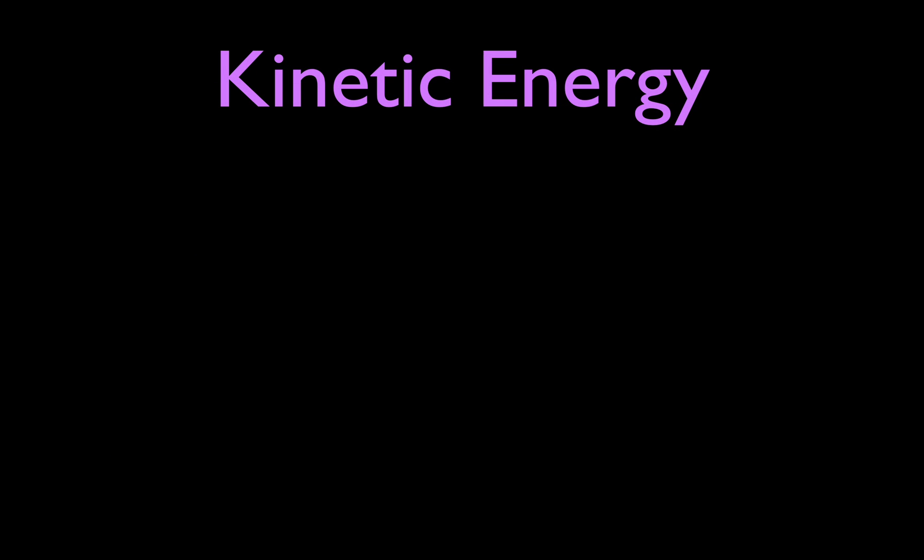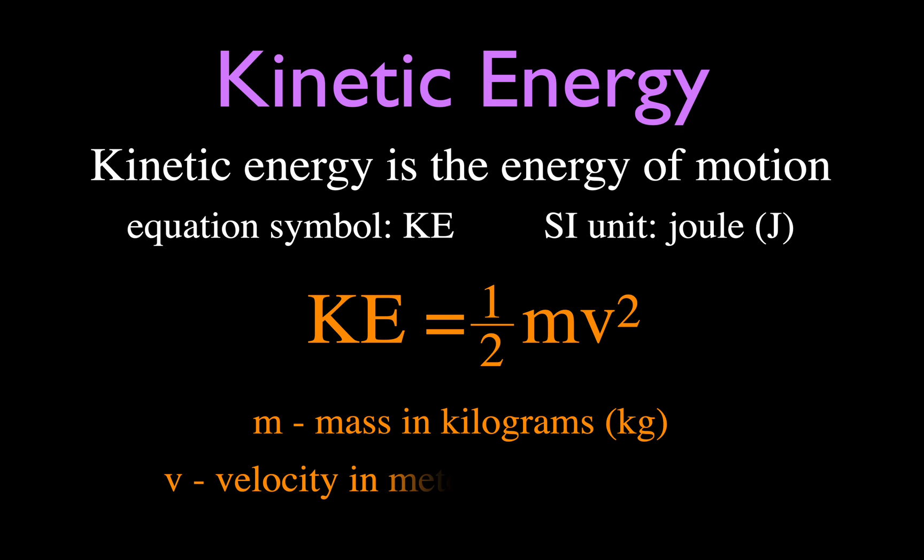We're going to be talking about conservation of mechanical energy, which is basically conservation of kinetic and potential energy. Kinetic energy is the energy of motion — its symbol is KE, and the unit is the joule. The equation is KE equals one-half mv squared, where m is mass in kilograms and v is velocity in meters per second. Really, the most important part of the equation is the velocity or speed.